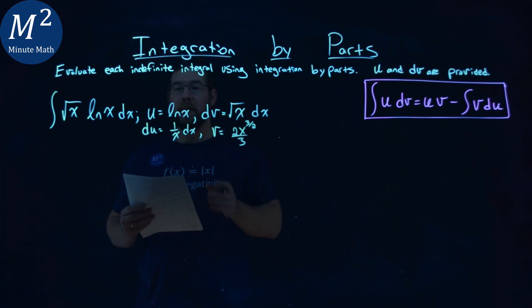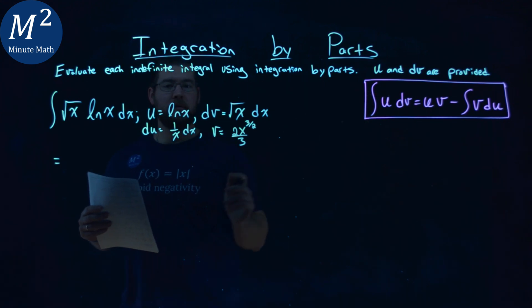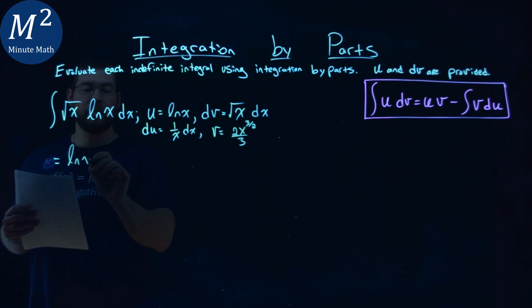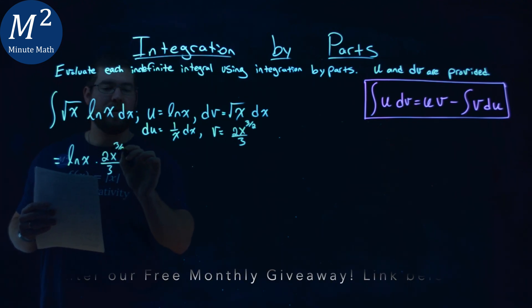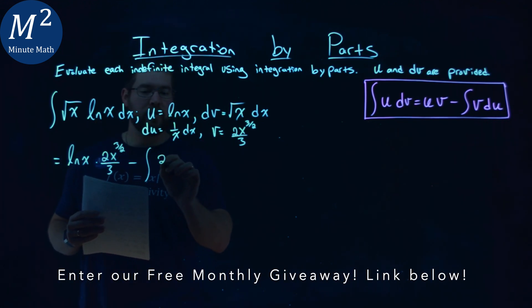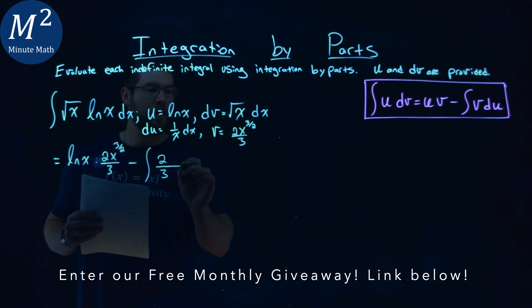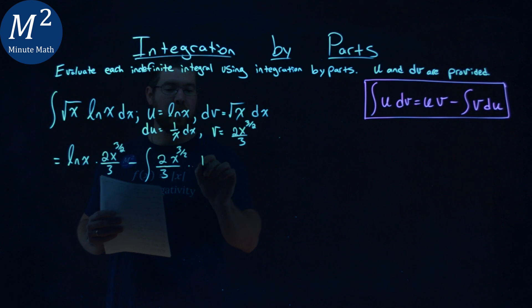Alright, so from here we have our u, du, our v, and dv values. Let's use our formula. So, formula says we have u times v, so our u value is natural log of x, and our v value is 2 thirds times x to the 3 half power, minus the integral of our v value, which is 2 thirds x to the 3 half power, right there, times du, which is 1 over x dx.